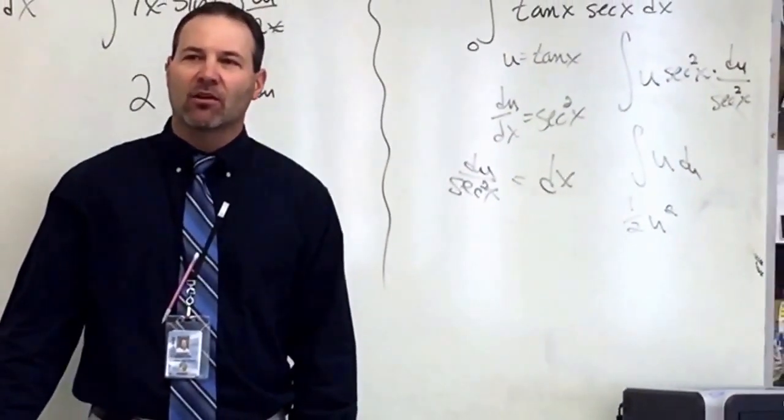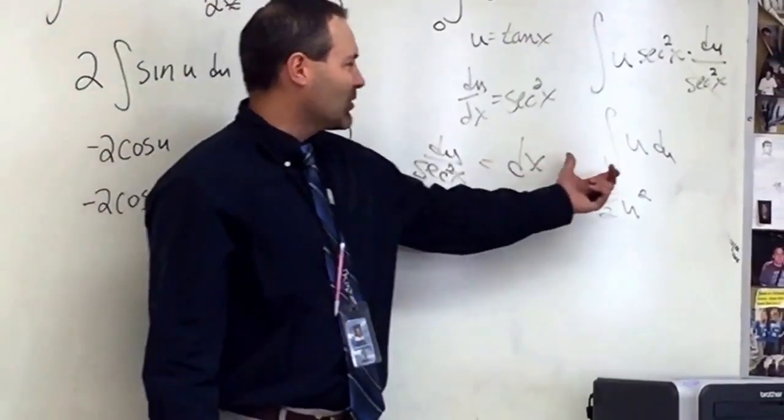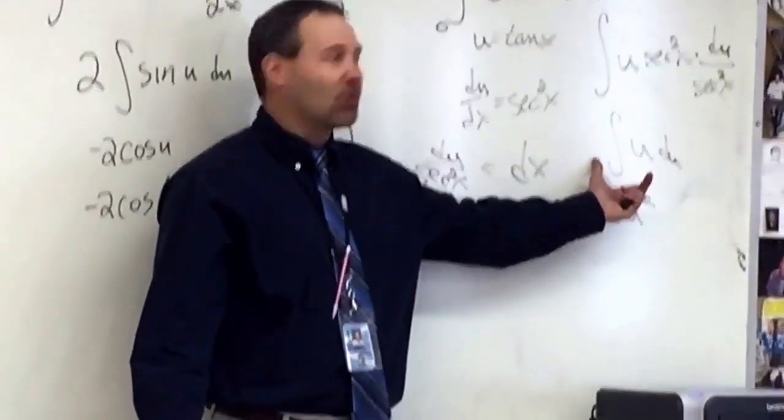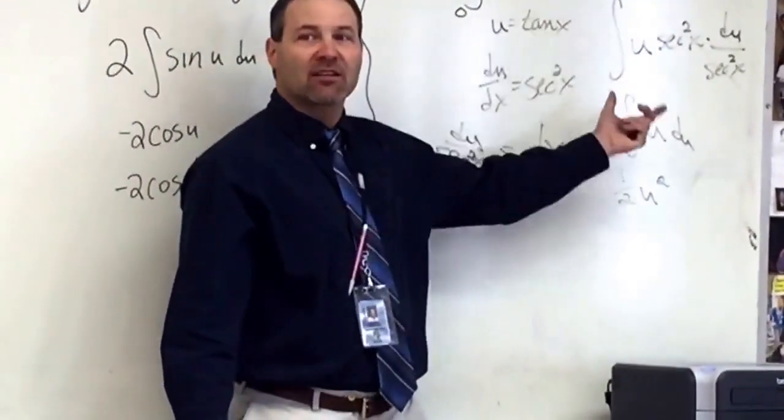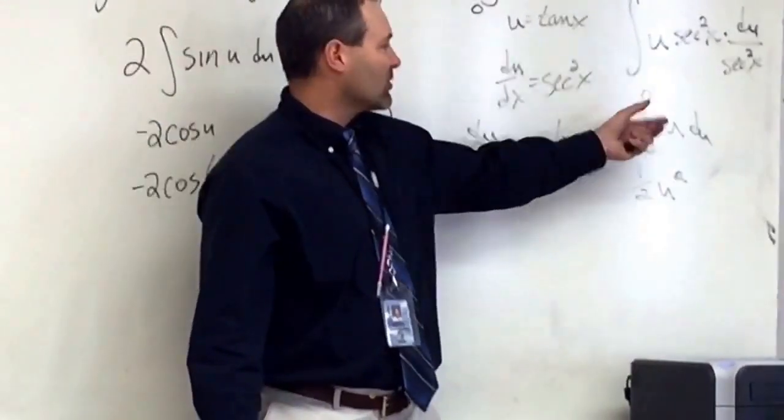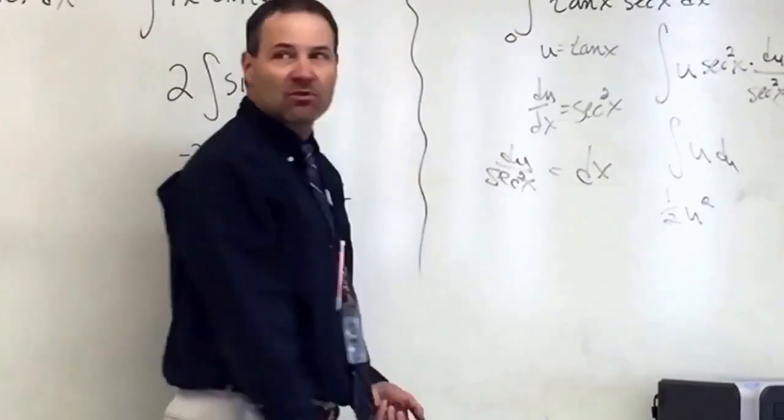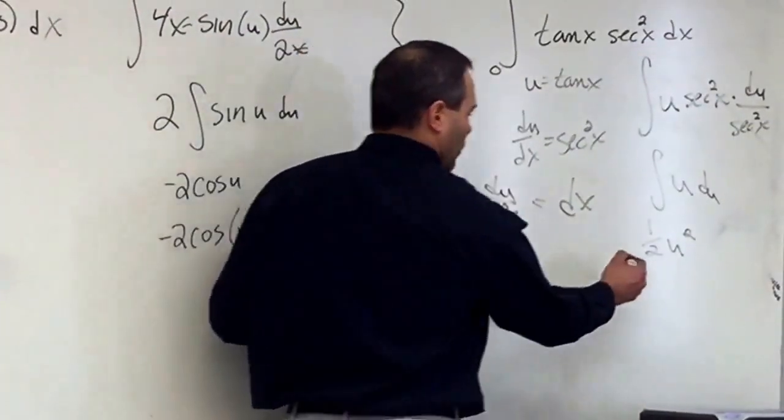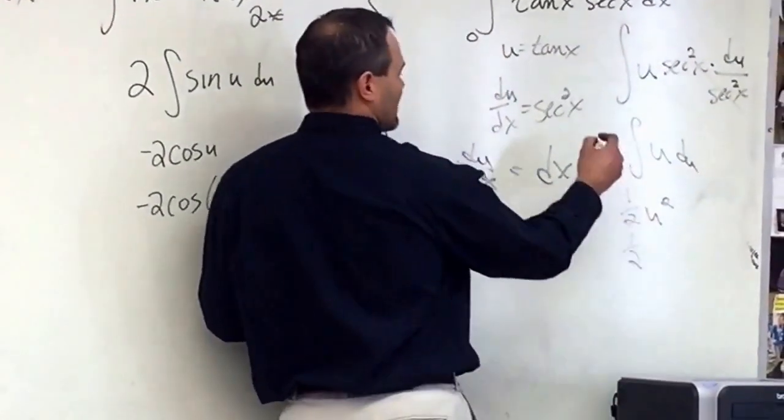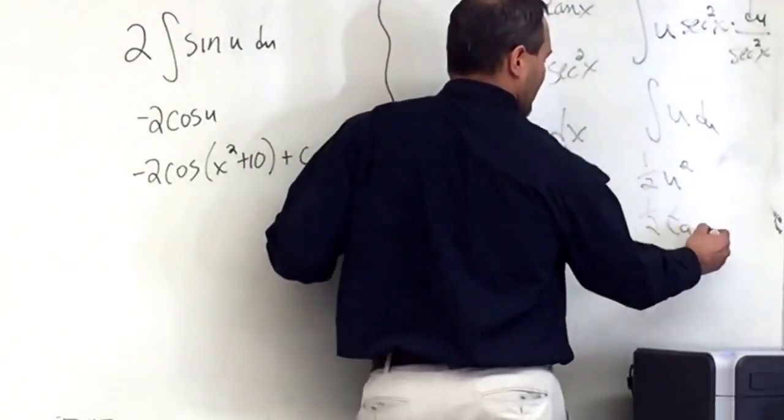So do you see the value in u substitution when we end up with an integral of u? That's a whole lot better than that, right? So our objective is to rewrite the integral in terms that we know the anti-derivative. So 1 half u squared. So it's 1 half tangent squared x.